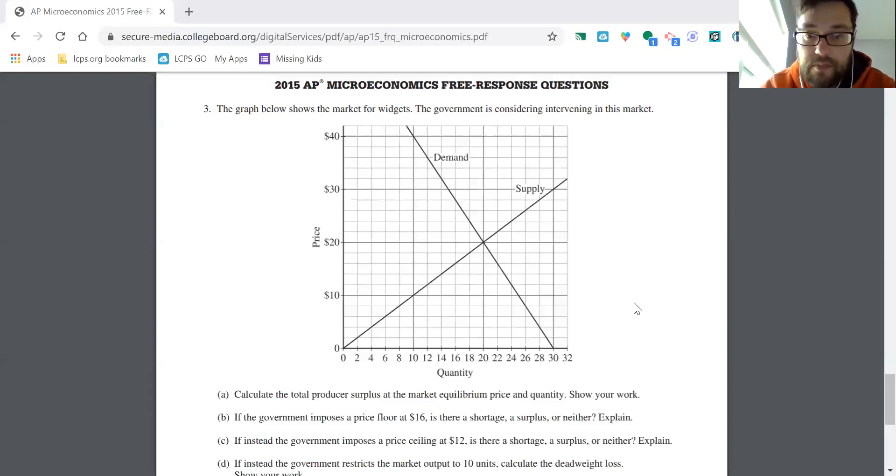Price floors have to be set to be effective above the market equilibrium and price ceilings need to be set below the market equilibrium. Now we're going to do a different policy. If instead the government imposes a price ceiling at $12, is there a shortage, surplus, or neither? Same logic. And now, instead of a price floor, we've got a price ceiling and we're below the market, so now this one should have an effect.